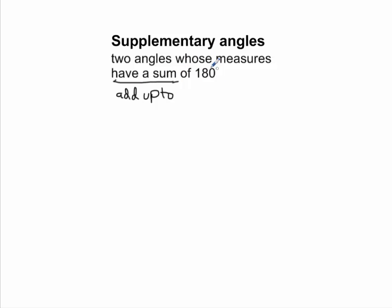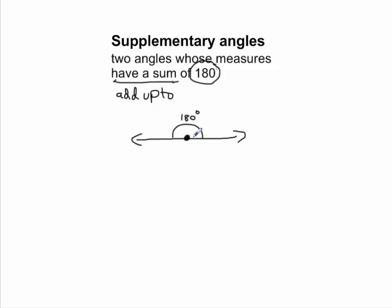I want to first start with what does 180 degrees look like. Well, 180 degrees will look like this. So we have a pair of opposite rays, and together these opposite rays form a line. A line is 180 degrees, so the angle formed by these two rays is 180 degrees. That's what you're looking for with supplementary angles — this is the visual representation.